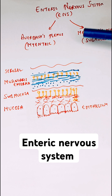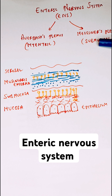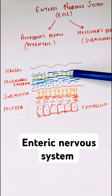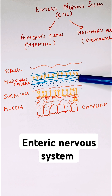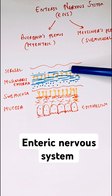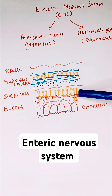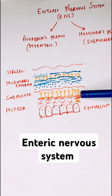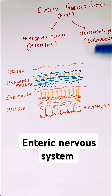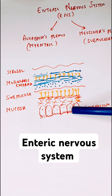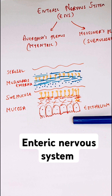Now let's see the functions of these two different groups of neurons. Auerbach's plexus or myenteric plexus, since it is present within the muscle layer, mainly controls the functions of these muscles — so it regulates gut motility and gut reflexes. The submucosal plexus, since it is very close to the mucosa and epithelial cells, mainly controls the secretions of the GIT.